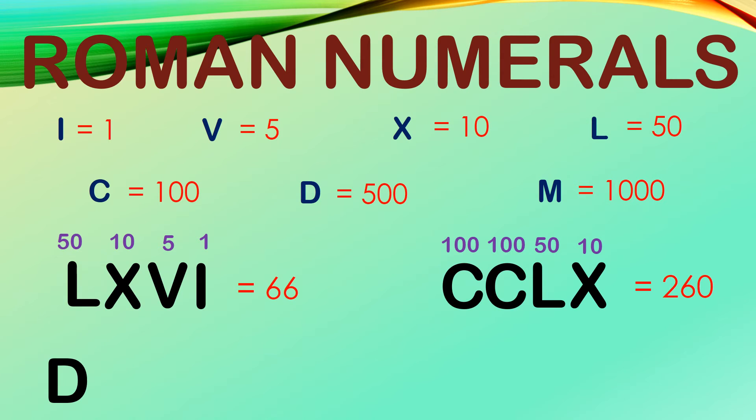What about D, C, C, L, V? D is for 500, two C's for 100 each, L is 50, V is 5, all together, we have 755.